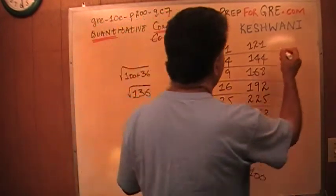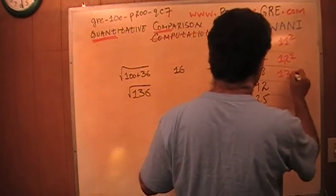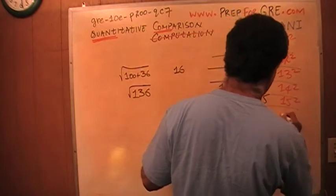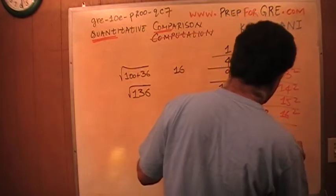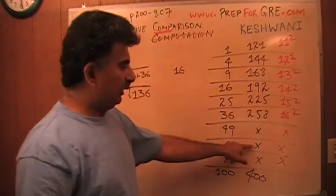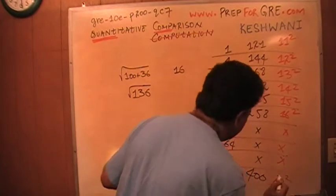So this is your 11 squared, 12 squared, 13 squared, 14 squared, 15 squared, 16 squared, 17 squared. You do not need to know. 18 squared, you do not need to know. They do not happen very often. And then 20 squared is 400.